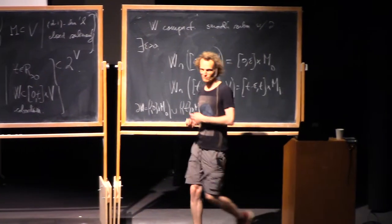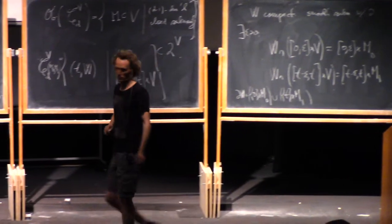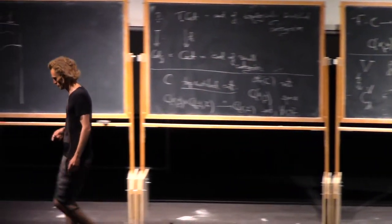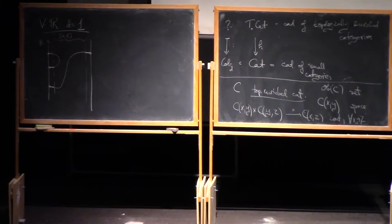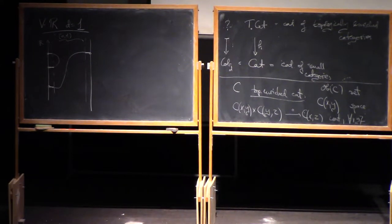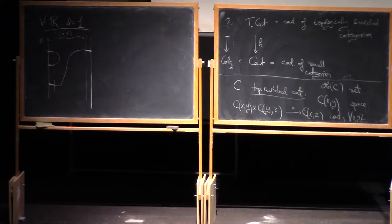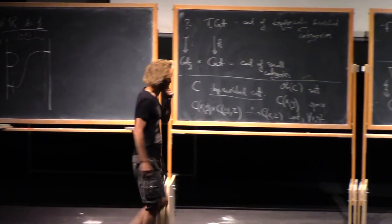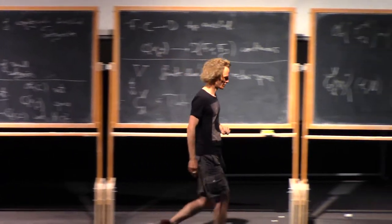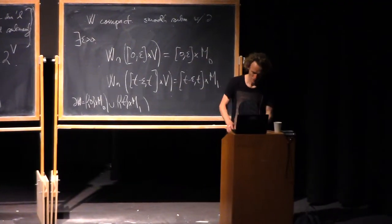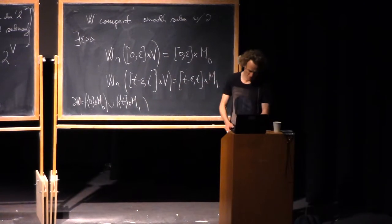Again, there's a version with orientation or any other kind of structure, but if you come to the problem session, there's a question about working out how that definition is. But I'll just talk about unoriented, but everything makes sense with any kind of tangential structure. So, this is still just a category. I didn't talk about topology. So, I should explain how to topologize this set of cobordisms.